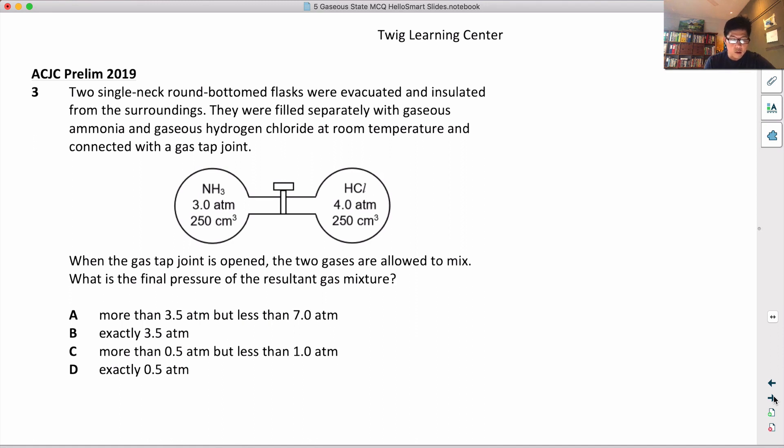Okay, there's ammonia and there's HCl in separate bottom flasks. After that, they open the gas tap joint and the gases are allowed to mix. They ask what's the pressure of the resultant gas mixture.